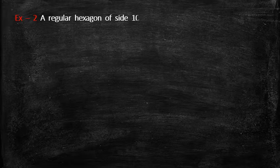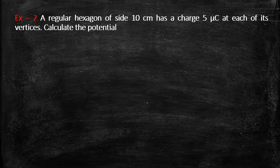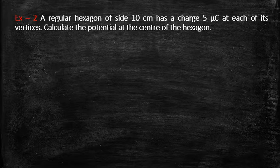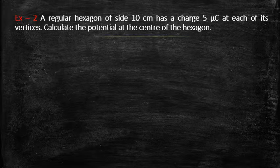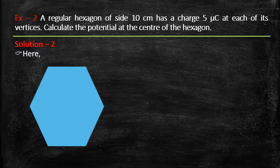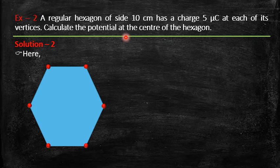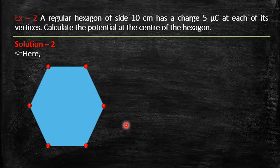In the second problem, we have a regular hexagon of side 10 centimeters with a charge of 5 microcoulombs at each of its six vertices. We are asked to calculate the potential at the center of the hexagon — a very simple problem. Each side is the same length, 10 centimeters, and we have six charges of 5 microcoulombs each at every corner.